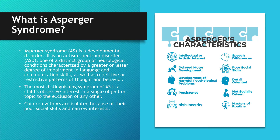Unlike children with autism, children with Asperger's Syndrome retain their early language skills. The most distinguishing symptom of AS is a child's obsessive interest in a single object or topic to the exclusion of any other. Children with AS want to know everything about their topic of interest and their conversations with others will be about little else. Their expertise, high level of vocabulary, and formal speech patterns make them seem like little professors.